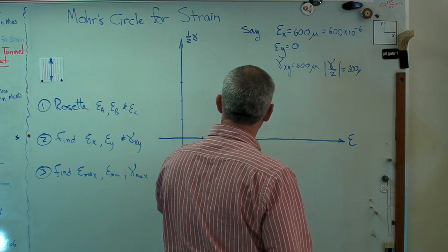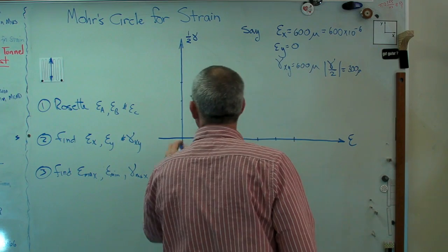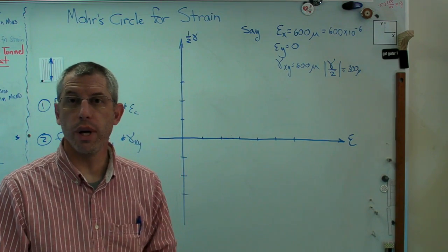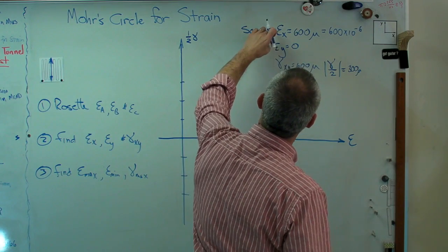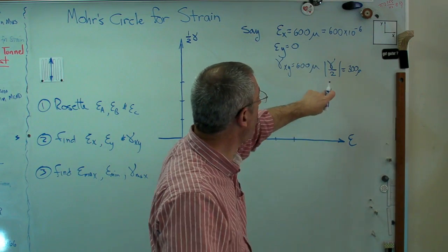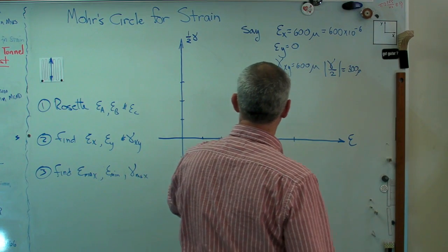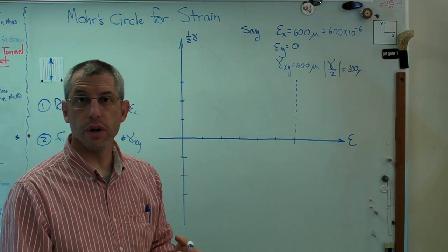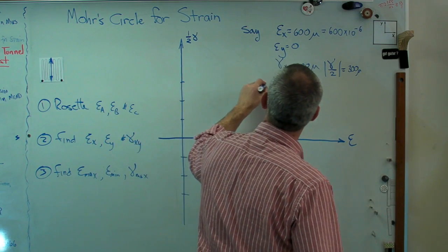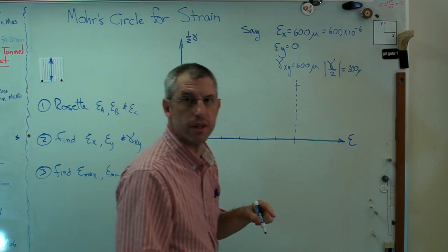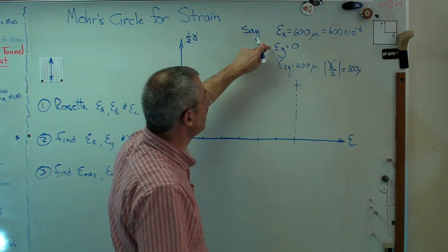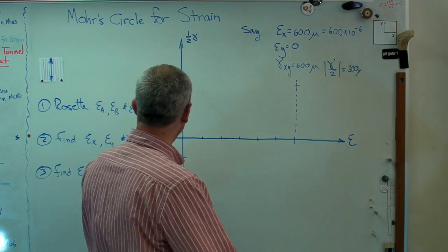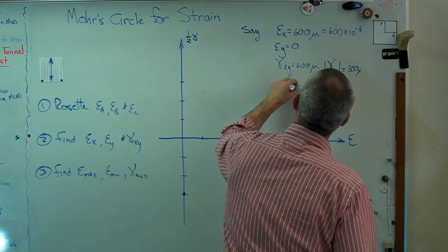So I've got some points on here. Each of those hash marks will be 100 micro strain. So let's plot the first point, epsilon x gamma xy over 2. So 1, 2, 3, 4, 5, 6. There's that point right there. Now I've got to go on the vertical axis. I need gamma xy over 2. So 1, 2, 3, and let's put that right there. Now epsilon y is 0, and gamma yx is going to be minus 300. So 1, 2, 3. There's the other point right there. So there's my two points.